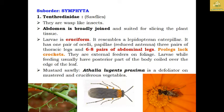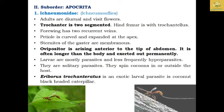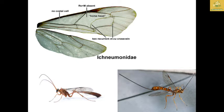In suborder Apocrita, the first family is Ichneumonidae. The adults are diurnal and visit flowers. The trochanter is two-segmented and the hind femur is trochanter-plus. The ovipositor is often longer than the body and permanently exerted. The scientific name Eriborus trochanteratus is an ectoparasitoid larval parasite on coconut black-headed caterpillars. The wings show two recurrent crossveins and are horse-shoe shaped, with no costal cell present.